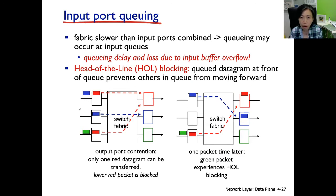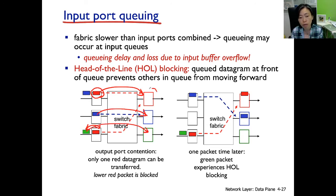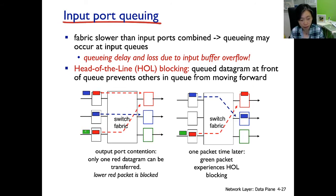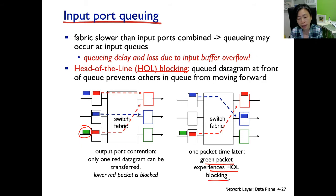But consider this case: if the green packet is at the front and the red packet is in the back, then one packet time later the red, blue, and green packets could all move to the output port — all three of them. So instead of receiving only two packets, we could have three. That's better. So the green packet in the first scenario gets blocked unnecessarily when it could really be moving forward. That is called head-of-line blocking — the green packet experiences head-of-line blocking.